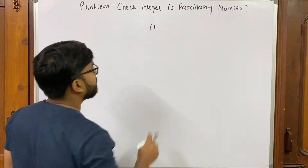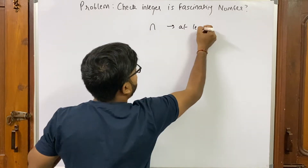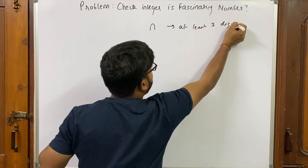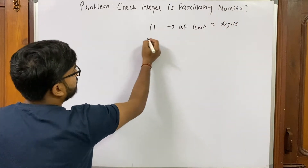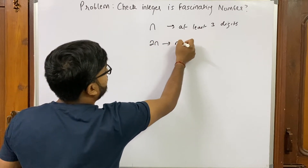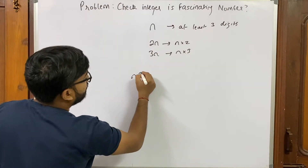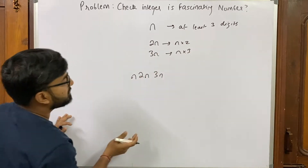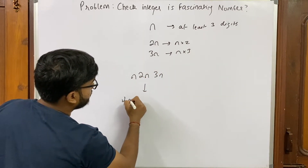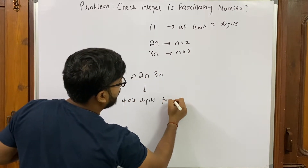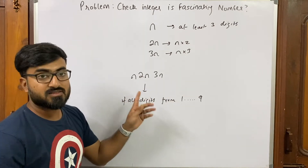So let's look at what a fascinating number is. Suppose we have our integer n. The first condition is that n should be of at least three digits — if it is less than three digits, it is not a fascinating number. Then we take n, find 2n (n times two) and 3n (n times three), and place them one after the other — that is, we concatenate the values. If all digits from one to nine are present exactly once in this concatenated value, then this is a fascinating number.